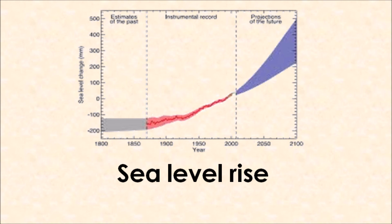We then have sea level rise. Connected to melting ice sheets and glacial retreat is the fact that warmer temperatures are causing ice sheets and glaciers to melt, adding fresh water into our seas and oceans, which increases water levels. We also have thermal expansion taking place — when ocean or seawater warms, the particles expand, and that again contributes to sea level rise.